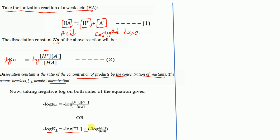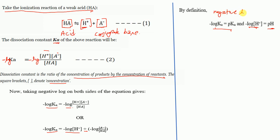By definition, −log(Ka) = pKa, and −log[H⁺] = pH. So in this equation, −log[H⁺] is replaced by pH and −log(Ka) is replaced by pKa. Substituting these definitions gives us: pKa = pH − log([A⁻]/[HA]).